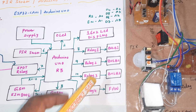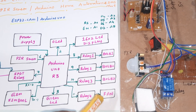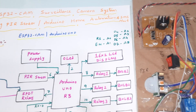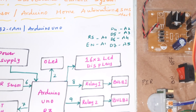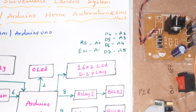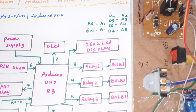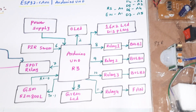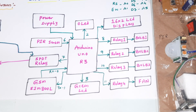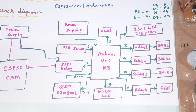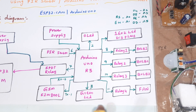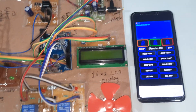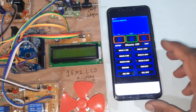We are also using four relay coils, bulb one, bulb two, bulb three, fan, and a 16x2 LCD display with pins RS, Enable, D4, D5, D6, D7, A0 through A5. This is our entire block diagram. We are monitoring theft alert as well as home automation. For home automation we are using the Blynk app from the Google Play Store.